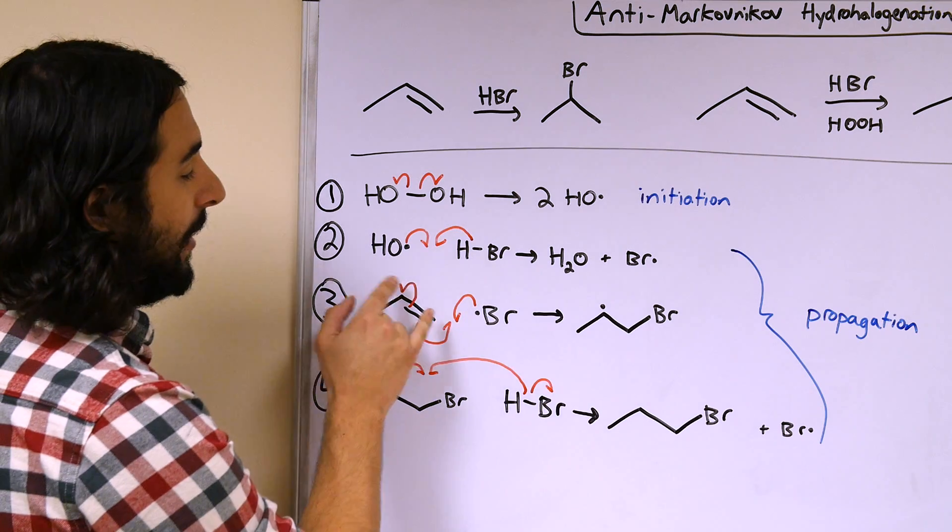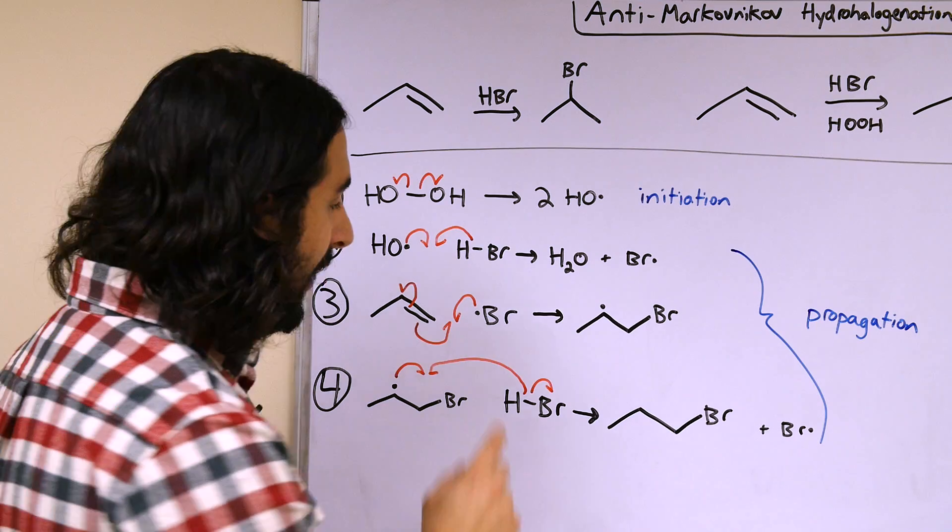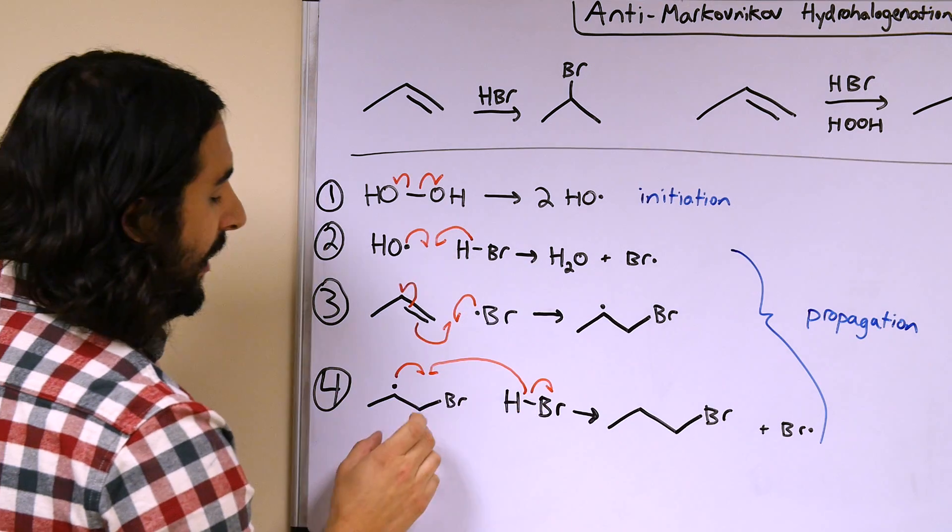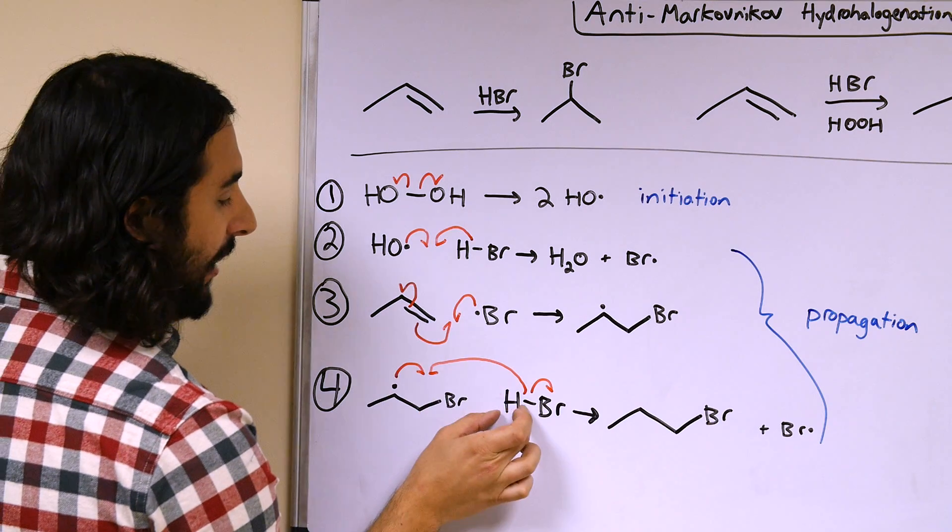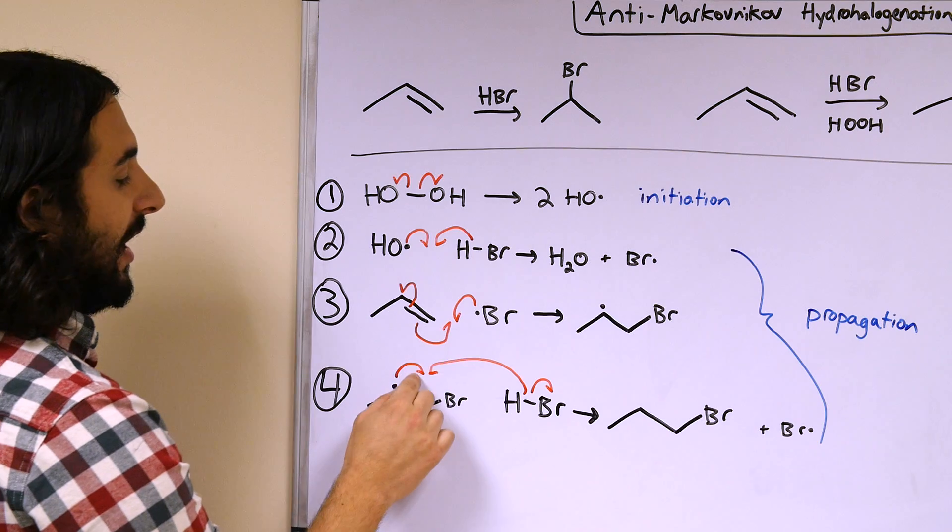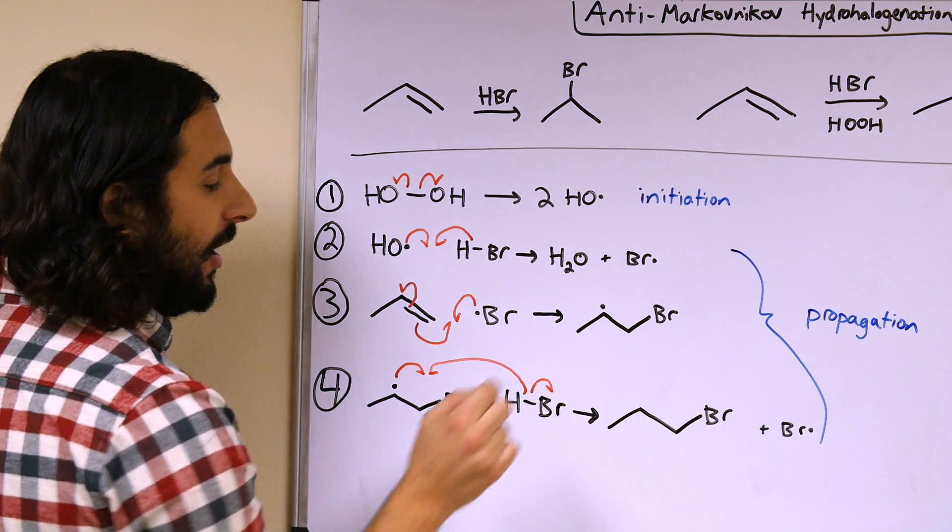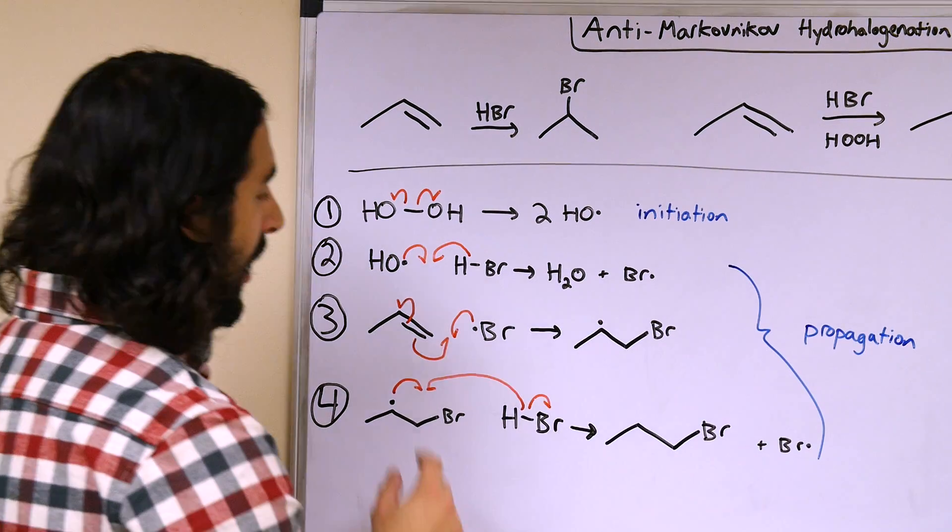That leaves a radical alkyl radical intermediate which will then go ahead and undergo another step with HBr and it will just extract a proton there, leaving another bromine radical there. Recall once again that these are all single-headed electron pushing arrows denoting the movement of a singular electron.